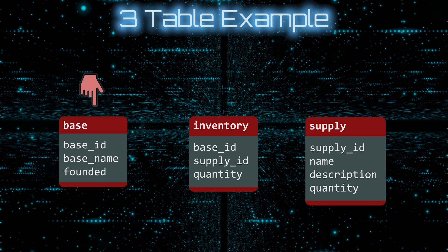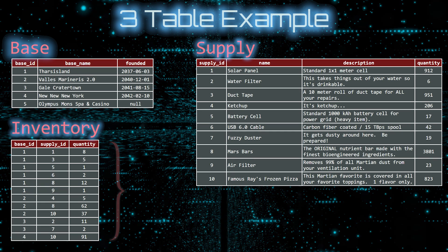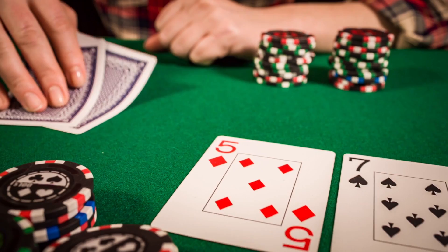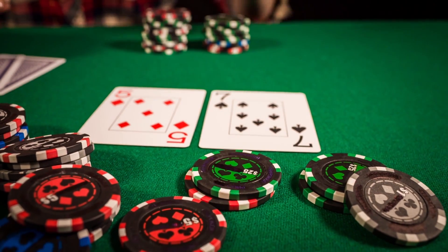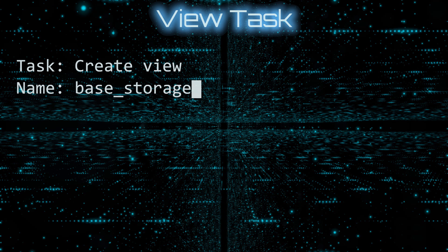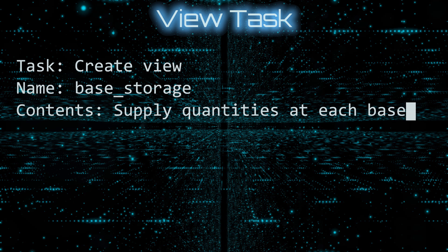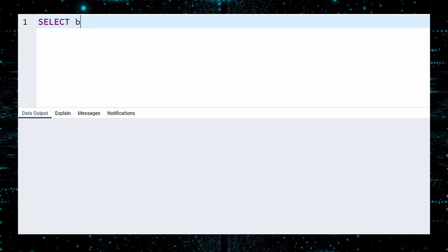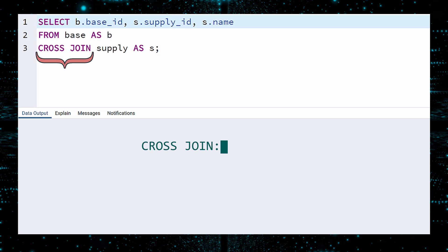The Base table holds information on all the different habitats on Mars. The Supply table lists all items available in the Central Martian distribution center. And the Inventory shows what supply items are available at each base and in what quantity. Look closely at the inventory data — if a base does not have a supply item in stock, it is not listed with a quantity of zero; instead, it is not in the table at all. Our task is to create a view called Base Storage showing the quantity of all supply items in stock at each base. As a first step, select the base ID, supply ID, and supply name for all possible combinations of base and supply item. This is done with a CROSS JOIN.